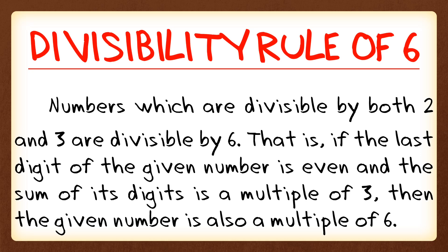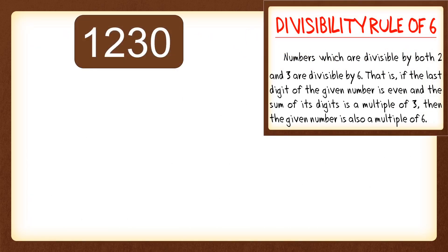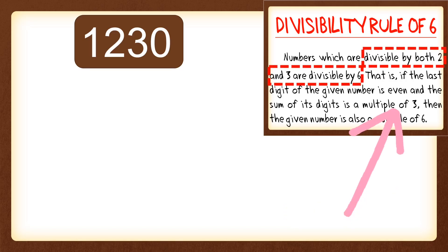In this divisibility rule, it should be divisible by both 2 and 3. I'll post the divisibility rule so we can follow and understand what we're trying to answer. I have here 1,230. We're going to determine if that number is divisible by 6. To do that, we first need to determine if the number is divisible by 2 and divisible by 3, and then we can consider whether the number is also divisible by 6.